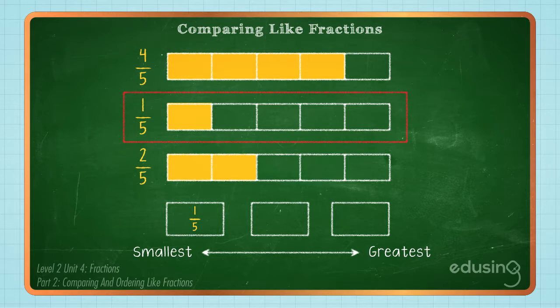1 fifth has the least number of shaded parts, so it is the smallest, followed by 2 fifths. Lastly, 4 fifths is the greatest.